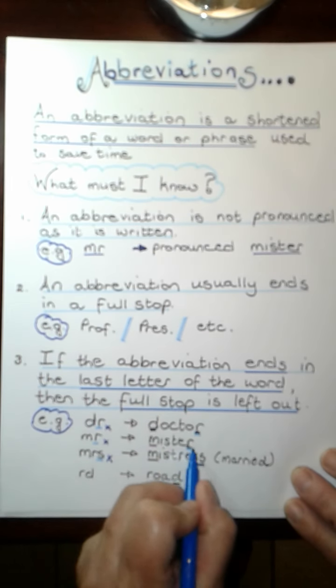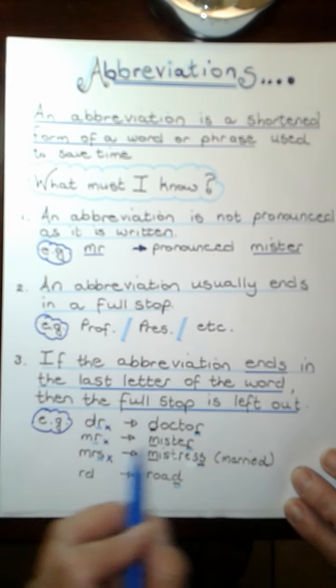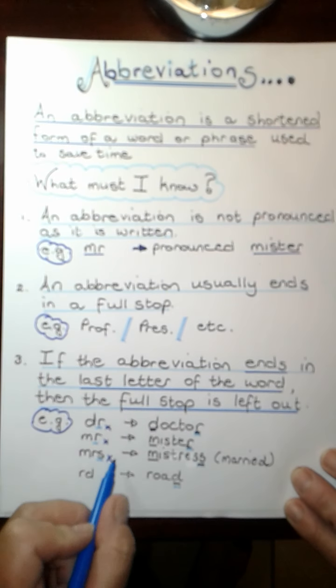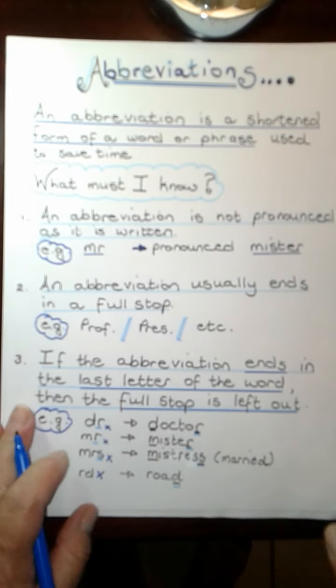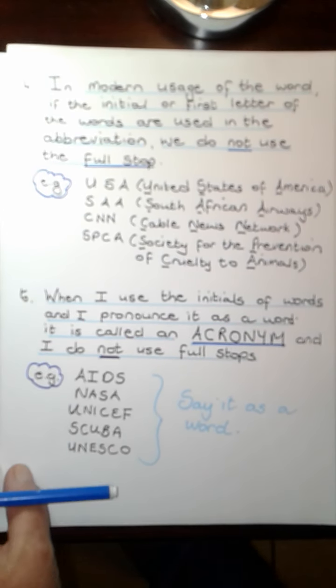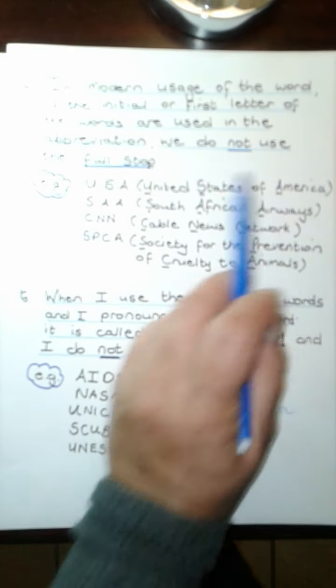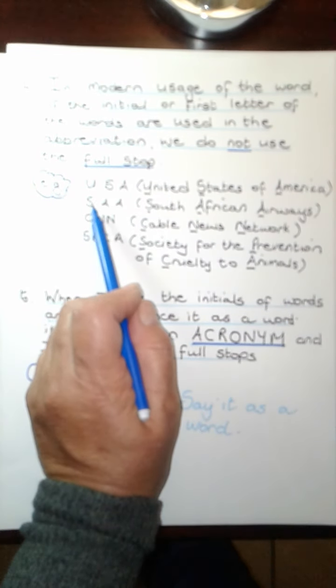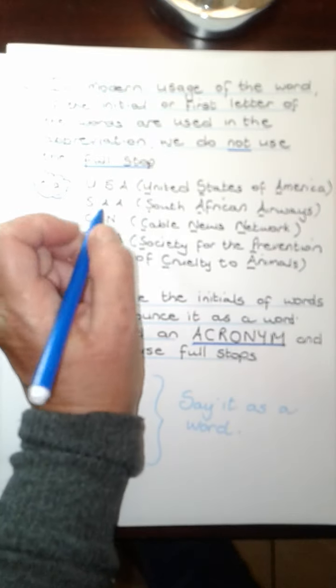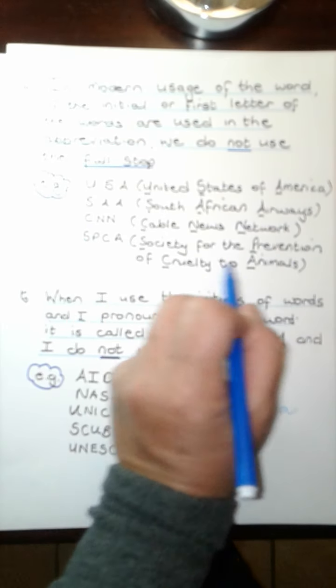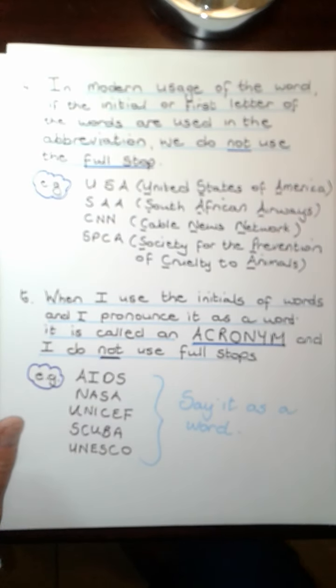When it ends with the last letter of the word, it does not get a full stop. You do not put one there. Mr, M-R. There's my R. It ends with the last letter of the word. Mistress, M-S. There's my S. Road. There's my road. Does not get a full stop. Then in the modern usage of the word as we use it nowadays, if the initial or the first letter of the words are used like United States of America, USA, we do not use a full stop. If the first letter of each word is used, South African Airways, SAA, you don't need to put a full stop. Cable News Network, CNN. Society for the Prevention of Cruelty to Animals, SPCA.